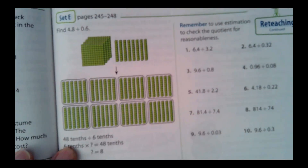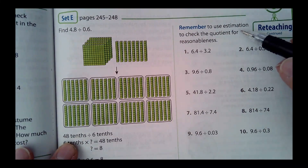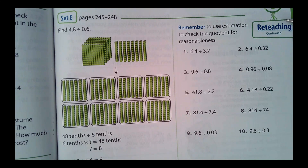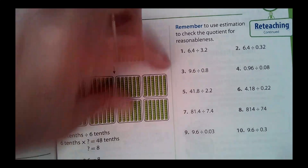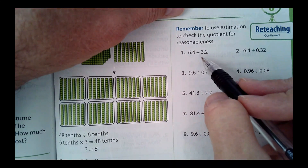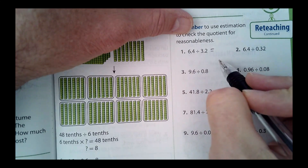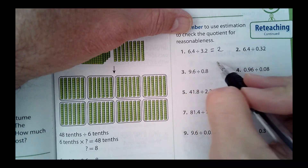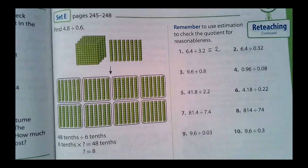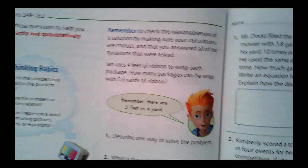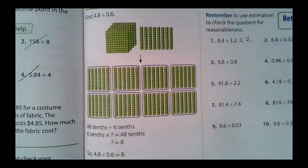Now I'm on page 257, Set E — 'use estimation to check for reasonableness.' You guys can do problems one through ten. Look at the first one: it's really easy. 6.4 divided by 3.2 — Mr. Andresen, yeah, it's two. 3.2 times two is 6.4. Some of these you might be able to do in your head. Plan on doing the rest of this maybe tomorrow in class. So that's your homework: all the way through Set E on page 257.